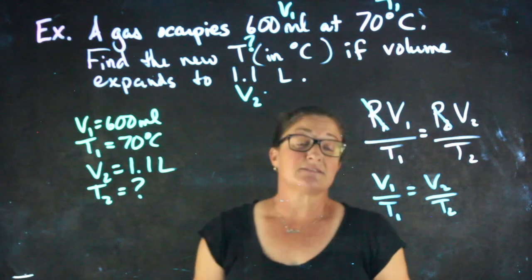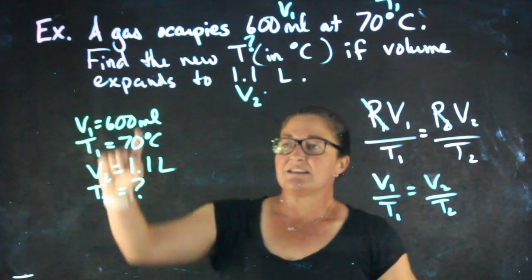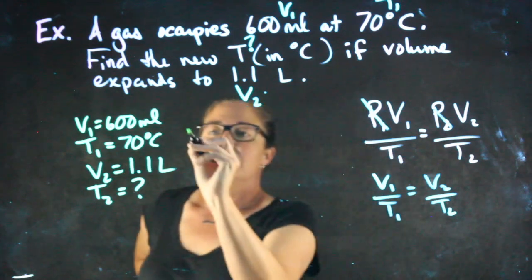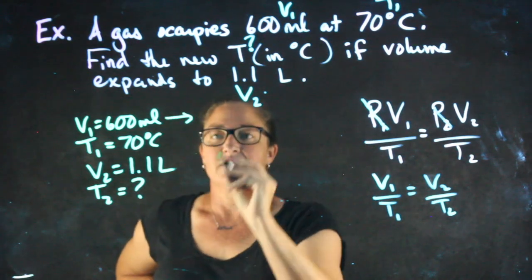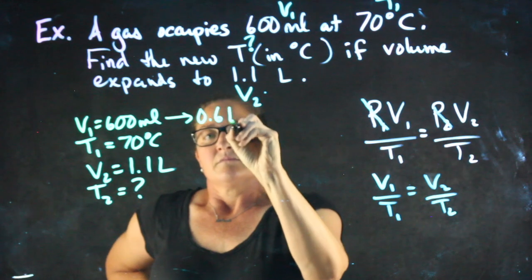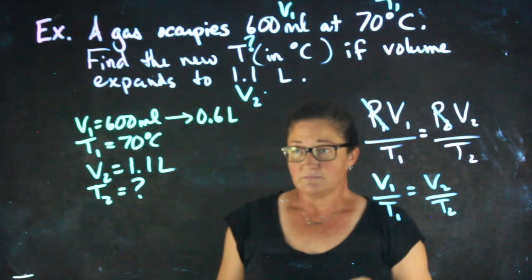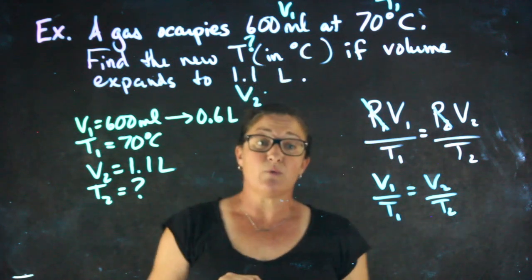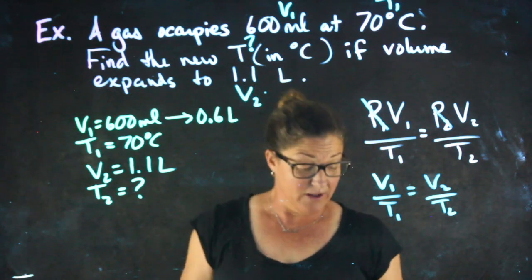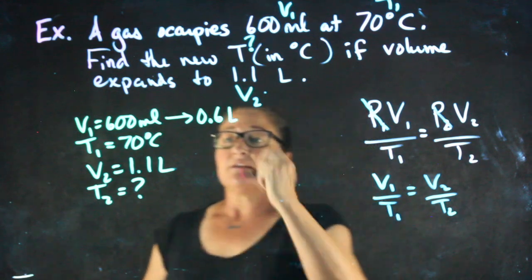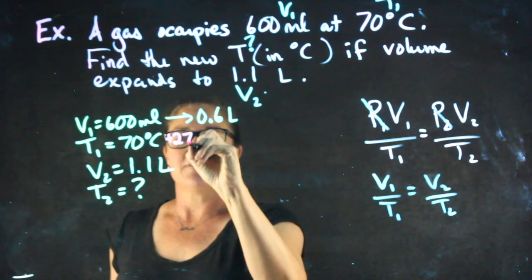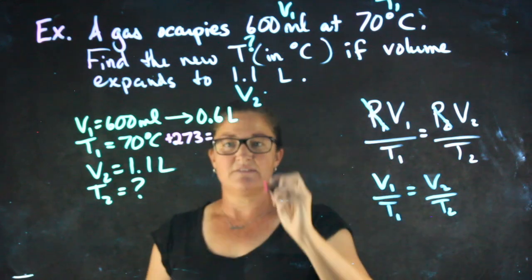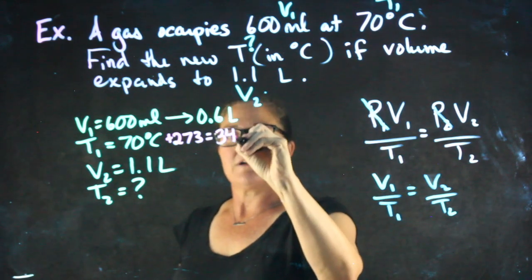First of all, the first thing I notice is my volumes aren't in the same units. I need to either convert this to liters or that to milliliters. I'm going to choose to convert 600 milliliters to 0.6 liters. Next, before I plug in temperature, it has to be in Kelvin. Even if I eventually want it in Celsius, it has to be in Kelvin when I plug it in. So to convert that to Kelvin, I'm going to add 273 to it. 70 plus 273 is 343.